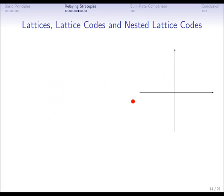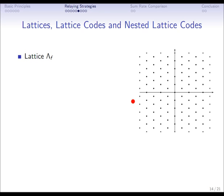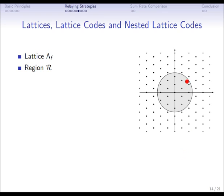What are nested lattice codes? First we have to have a lattice, which is just a discrete subgroup of n-dimensional space. I'm going to visualize all of that in two-dimensional space. To transmit information with this we have to confine ourselves to a finite number of points, so we introduce a bounding region — for example a circle — and then we intersect the circle with the lattice or a translation of the lattice. The circled points are now the lattice code, which can be used for transmitting.